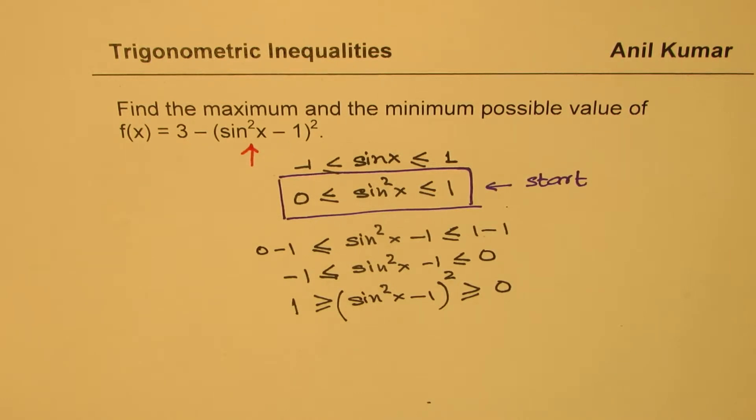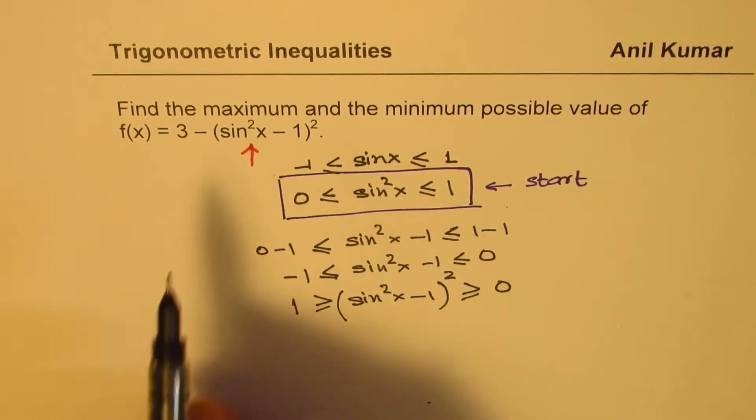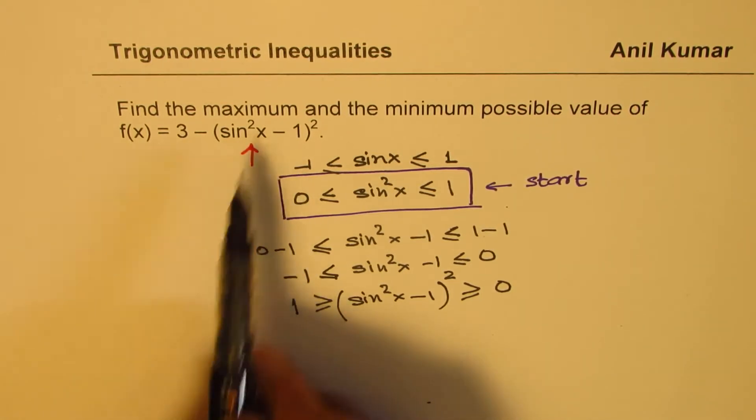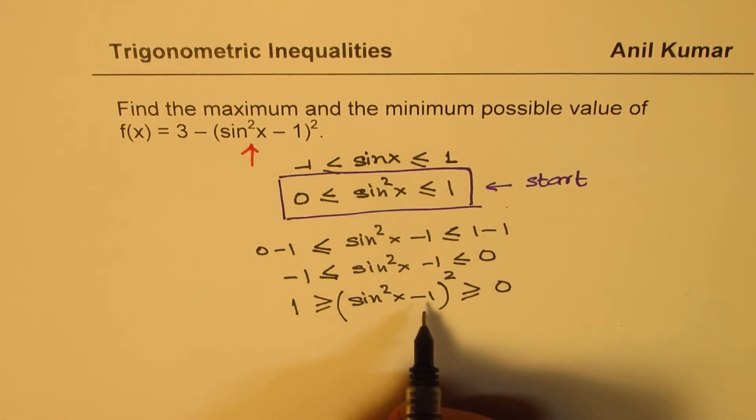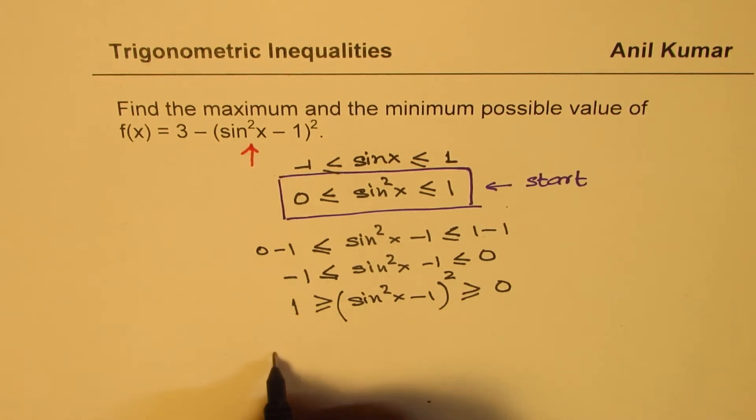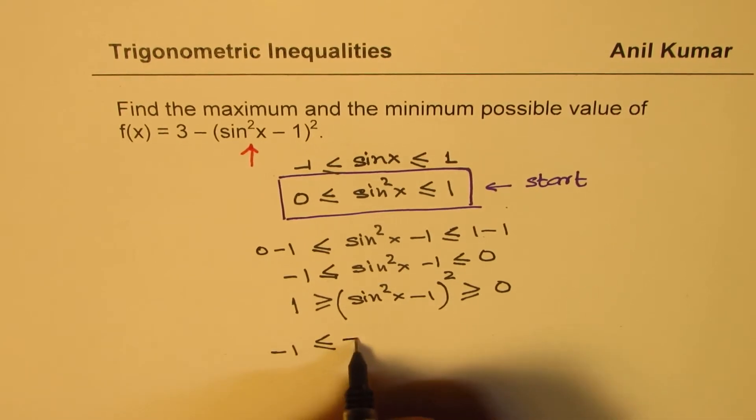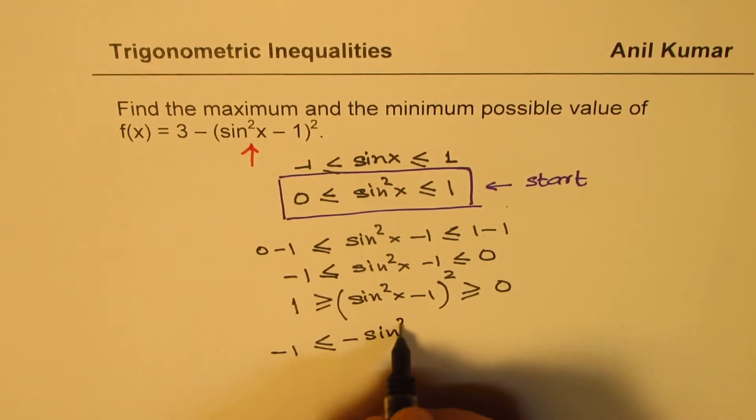And now when we do minus of this value, so if I do minus of this value, the signs will change. So it is minus 1 greater than equal to minus of (sin²x - 1)² and less than equal to 0.